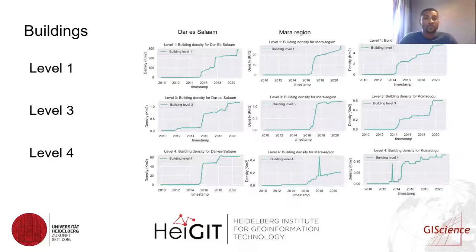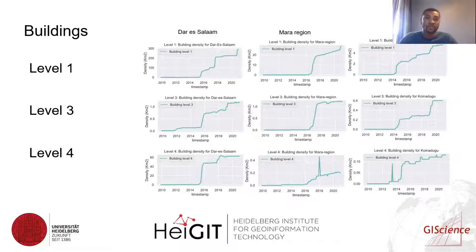The results for buildings across levels one, three, and four overall show that the density decreases from level one to level four. Surprisingly, in Dar es Salaam we witnessed that the elements mapped in level four were more than in level three.